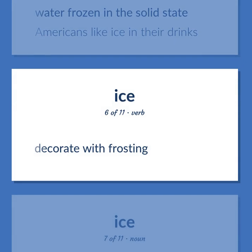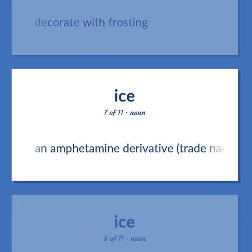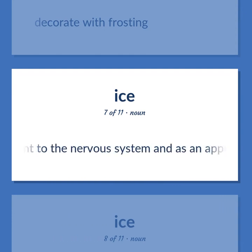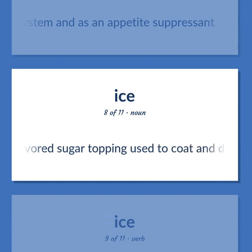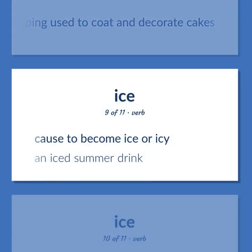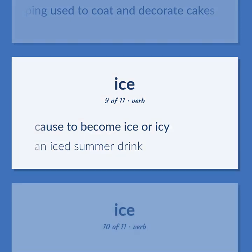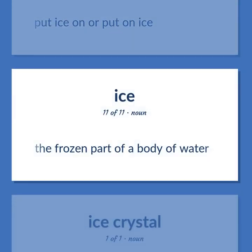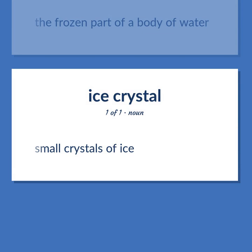Decorate with frosting. An amphetamine derivative, trade name Methedrine, used in the form of a crystalline hydrochloride as a stimulant to the nervous system and as an appetite suppressant. A flavored sugar topping used to coat and decorate cakes. Cause to become ice or icy. An iced summer drink. Put ice on or put on ice. The frozen part of a body of water. Small crystals of ice.